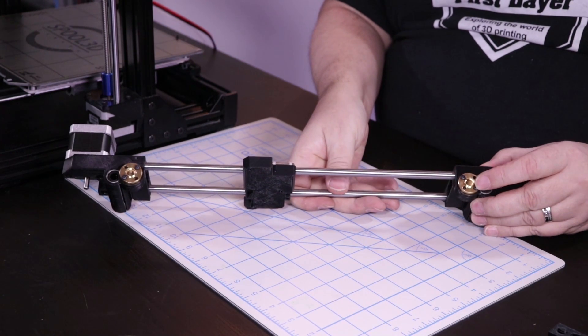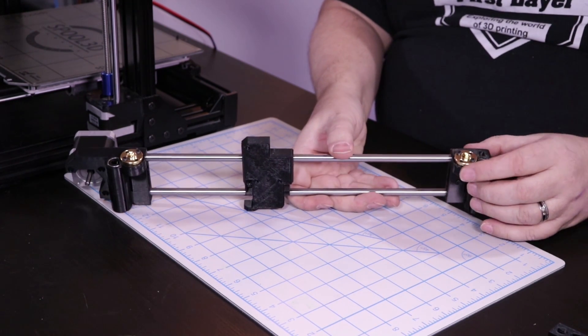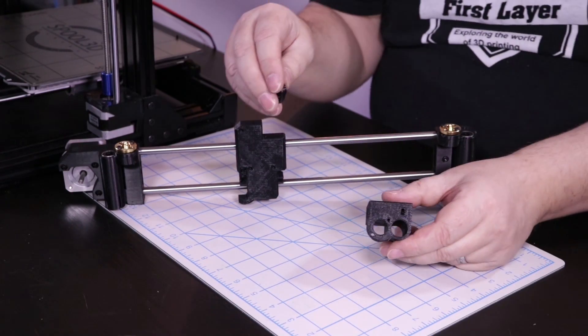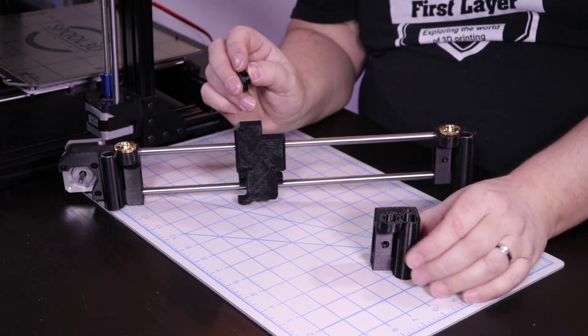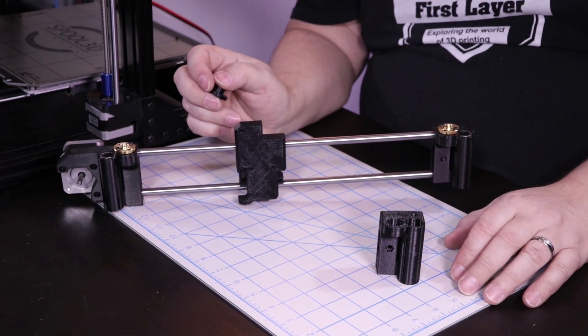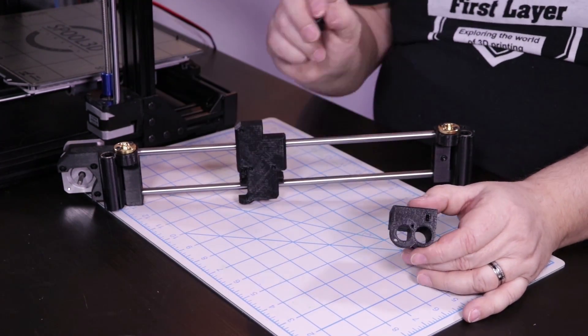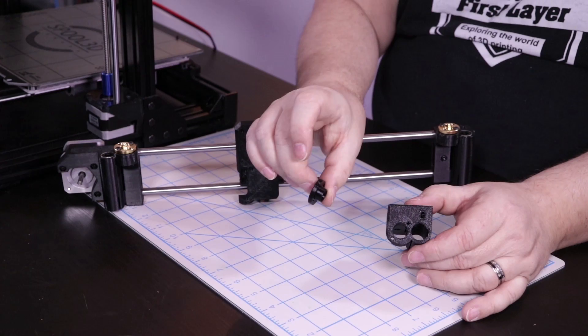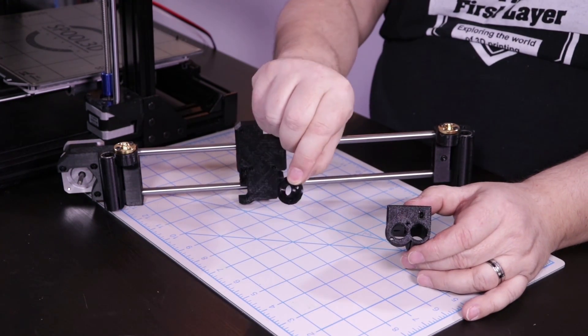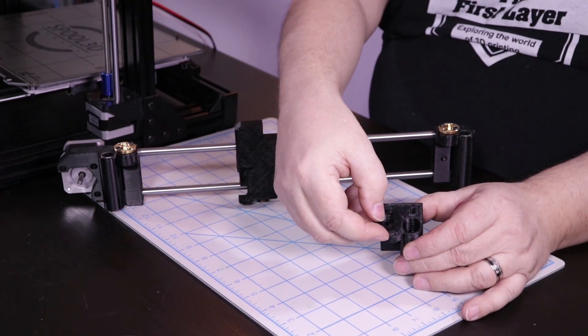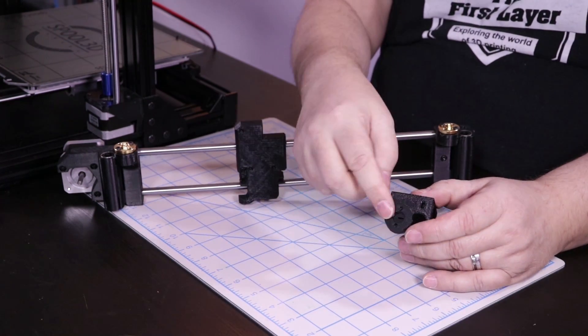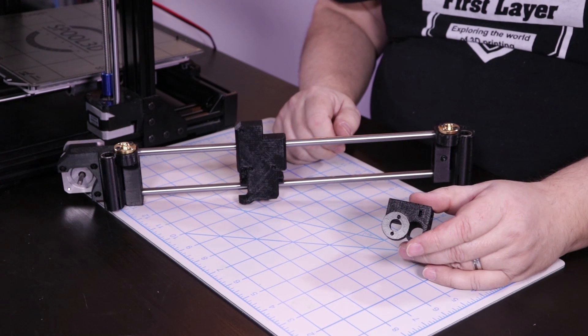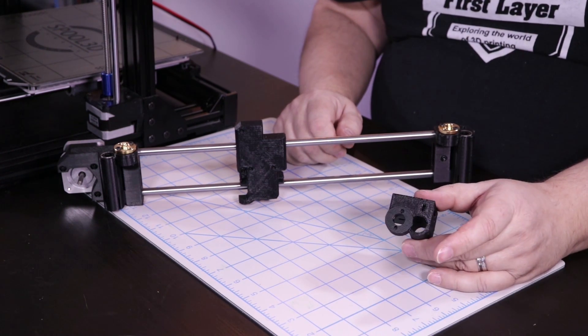Now, you'll notice we are using standard lead screw mounting hardware here. But what we've had to do is this is a Prusa STL right here for the idler end of your x-carriage. This hole here is not a standard size, at least not for North America.